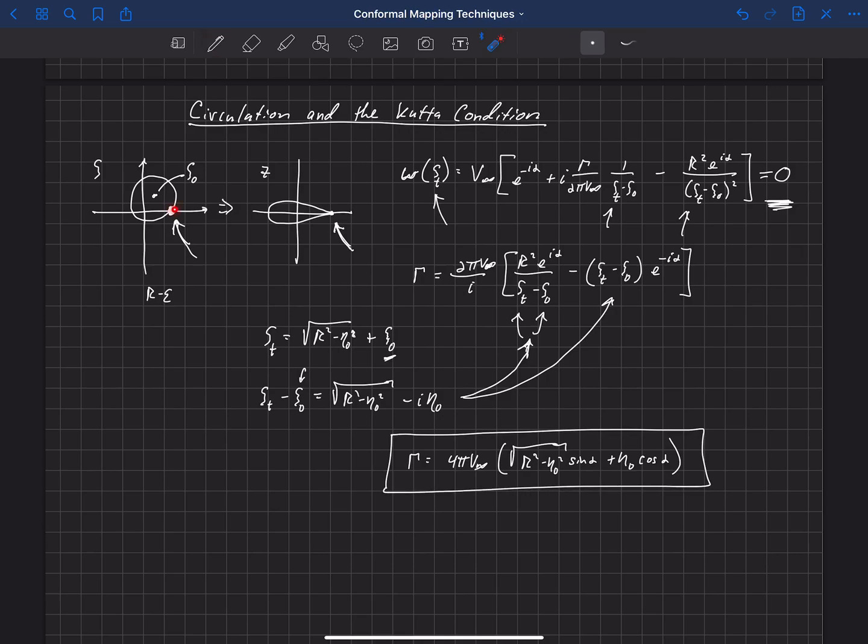And then by default, this trailing edge will be a stagnation point and satisfy the Kutta condition, and that requires this much circulation. This value of circulation we're going to find is related to the amount of lift that this airfoil is producing. But basically once we know the offset of this cylinder zeta naught and the angle of attack and the free stream velocity, we can compute the circulation that will make that a stagnation point that satisfies the Kutta condition.